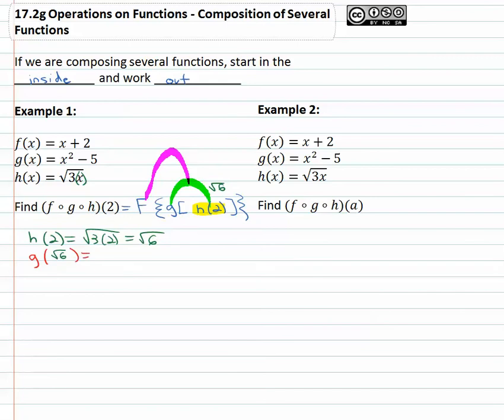Well, g is x squared minus 5, so it's going to be something squared minus 5. The variable gets replaced with whatever's in the parenthesis, the square root of 6. Well, what is the square root of 6 squared? Just 6, because square and square root are inverses, minus 5 is 1.